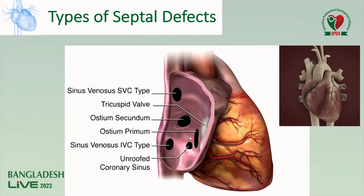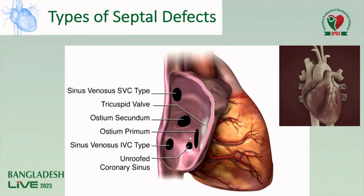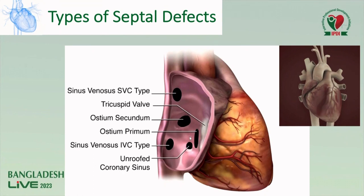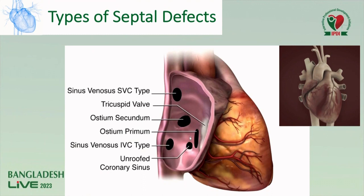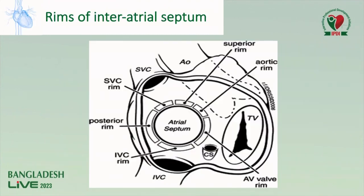Atrial septal defect is the most common congenital acyanotic heart disease. There are 4 types of atrial septal defect: most common is ostium secundum at 80%, ostium primum, sinus venosus type defect, and unroofed coronary sinus — involving the SVC or IVC.